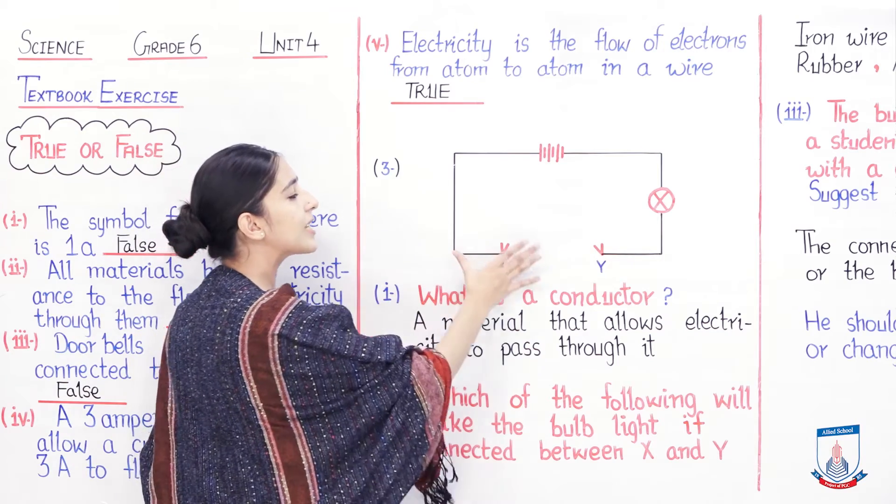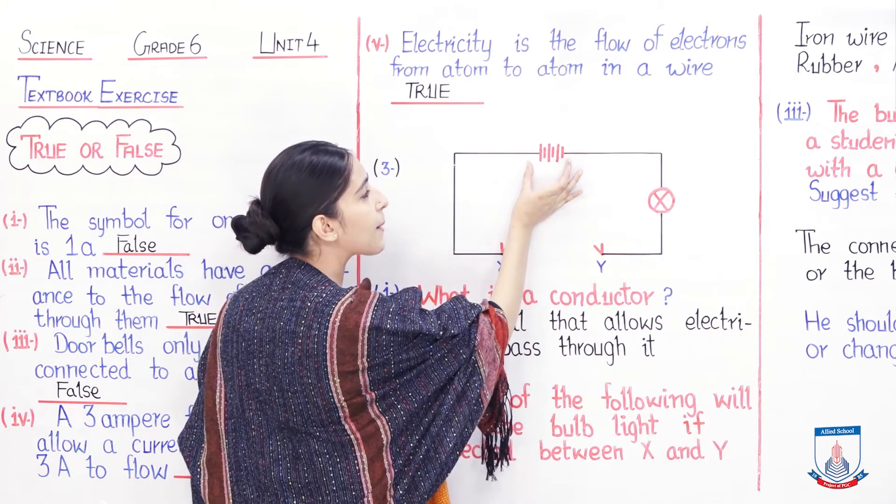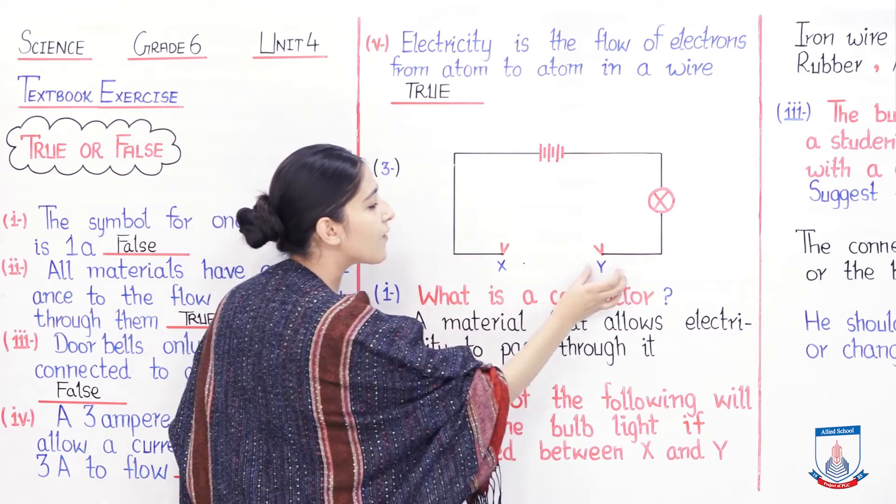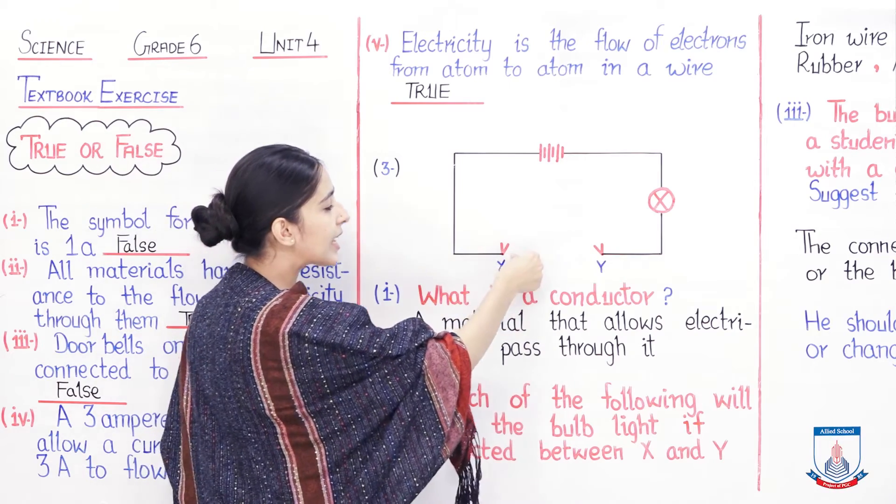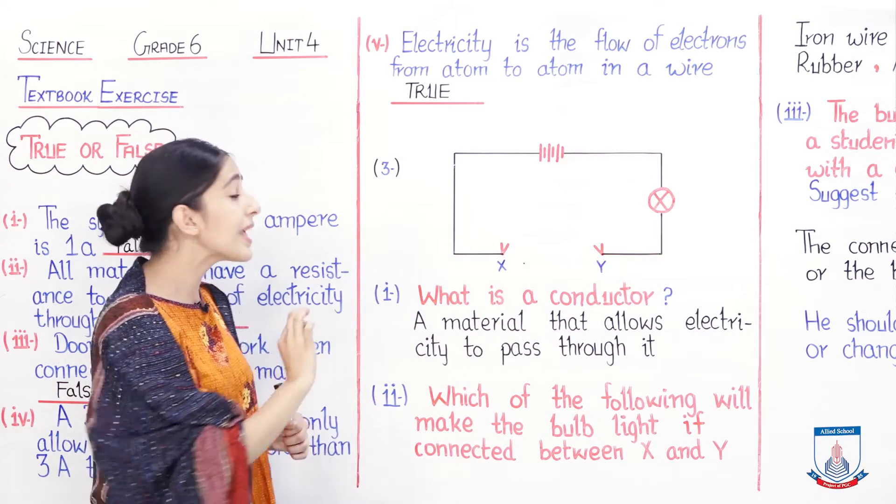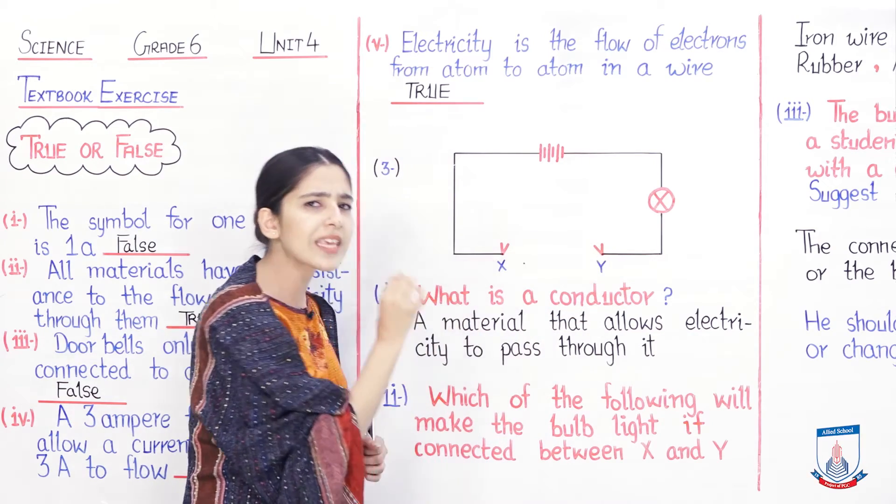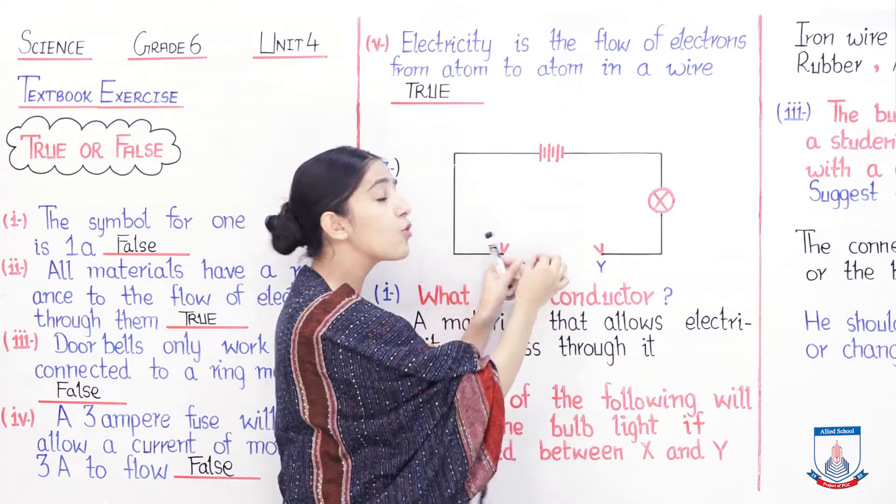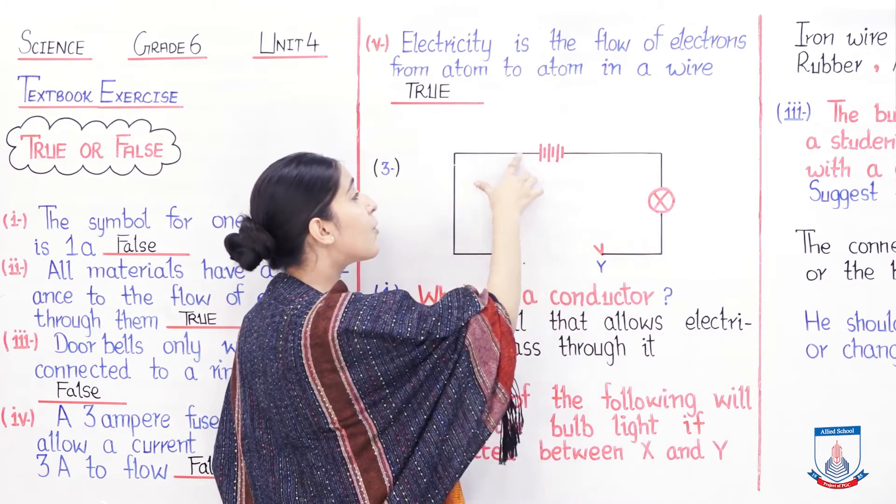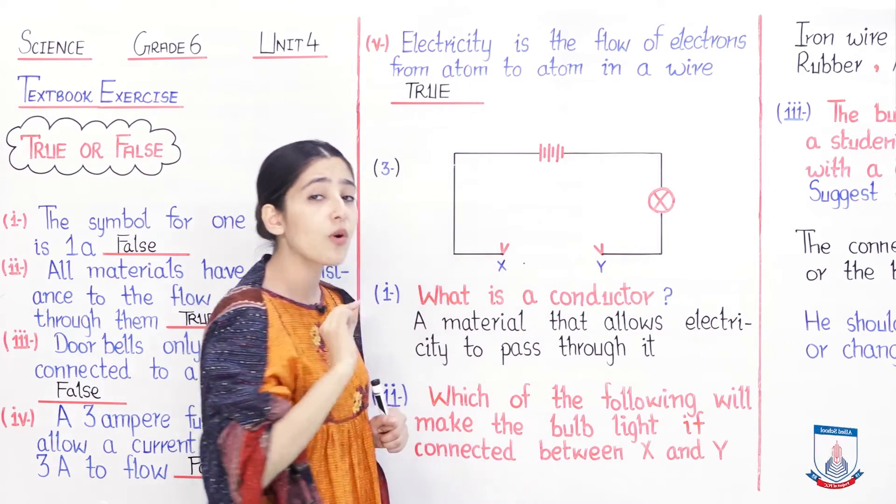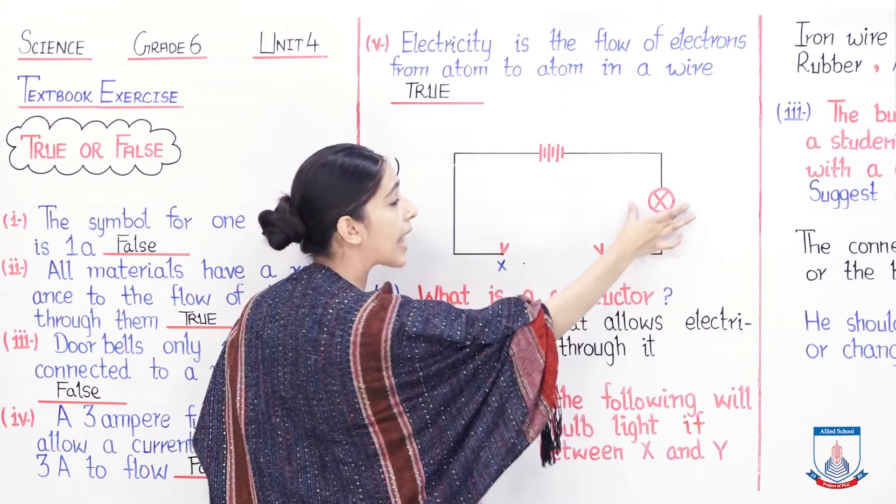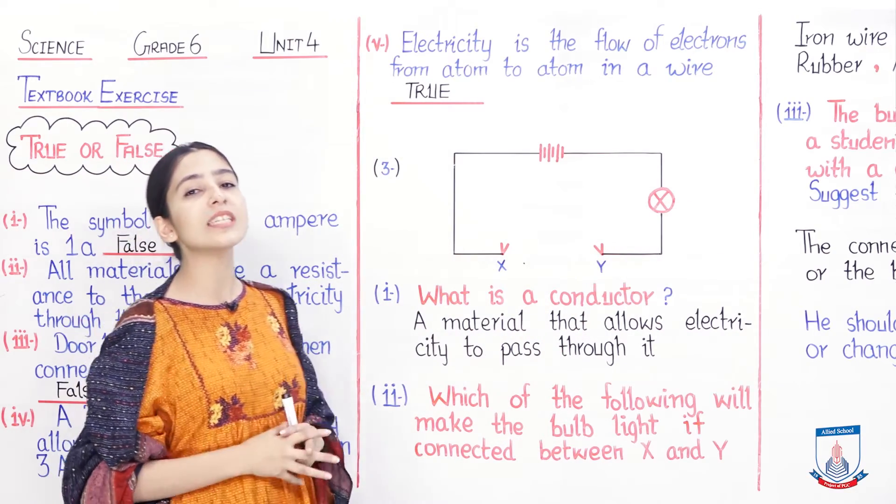Question number three mein aapko ek circuit yahaan peh given hai. Yahaan peh deekh sakti hain that this represents a battery. Battery connect ho rahi hai, and this is a lamp. This is the wire jo black color se maine banai. Aur X aur Y jo hain, these are the switches. Yahaan peh deekh sakti hain ki X aur Y ek dusre se door hain. Iska matlab ye jo wire hai, ye complete circuit abhi form nahi kar rahi. Jab hamare X aur Y dono switches aapas mein mil jayenge with the help of a wire, tab hamara circuit complete hoga. Aur yaha peh jo lamp hai woh light kar jayega. Because battery current ko flow karvayegi. Yaha peh abhi switch door hai, connect nahi hai, isi liye hamara lamp band hoga.